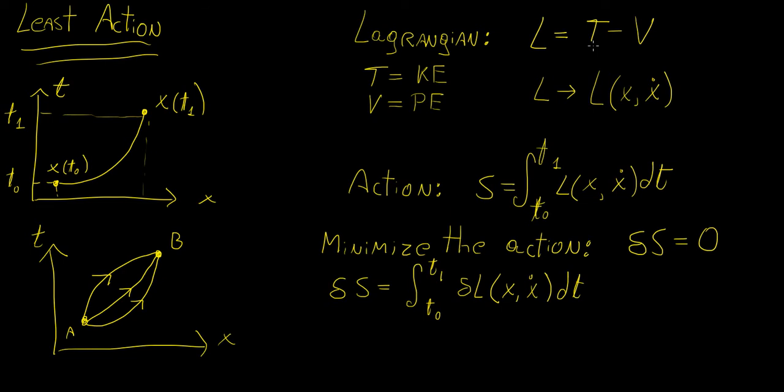Now the Lagrangian itself is a function of both position and velocity. And it is sometimes expressed in terms of position, velocity, and also time. But the time doesn't really play a major role, because time is essentially part of displacement and velocity anyway. So it is kind of implicit that it is already contained within those two variables.